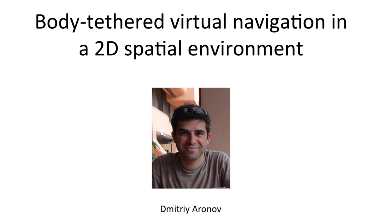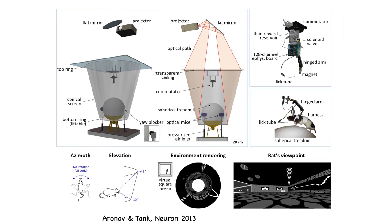This starts again with a virtual reality system, now for rats — a body-tethered virtual reality system. It consists of a spherical treadmill with a very large-diameter air-supported styrofoam sphere, surrounded by an inverted conical display screen with a projector from the top. The motion of the sphere is monitored with two optical mice located around the equator. The animal is held at the north pole with a tether, with a tetrode recording commutator allowing electrical signals to connect to the external world, and virtual environments are projected onto the surrounding screen. This is not a head-fixed preparation — it's what we call a body-tethered virtual reality system.